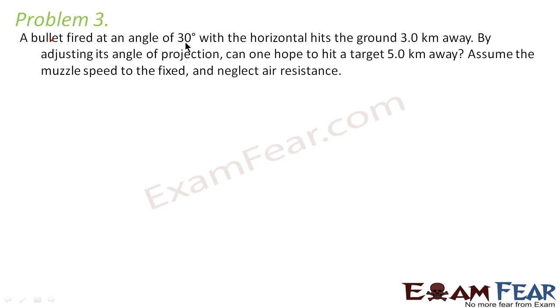A bullet fired at an angle of 30 degree with the horizontal hits the ground 3 kilometers away. That means, let us suppose, you fire a bullet here, making an angle of 30 degree with the horizontal. So what happens? It goes, flies high in the air and then comes back to the ground.